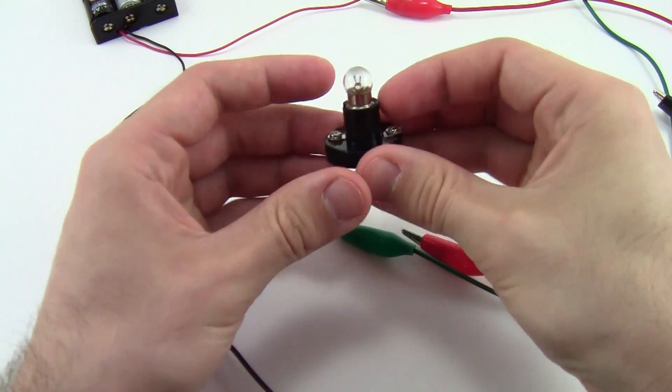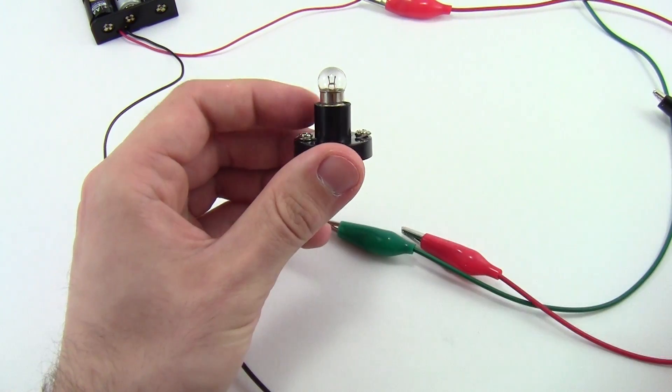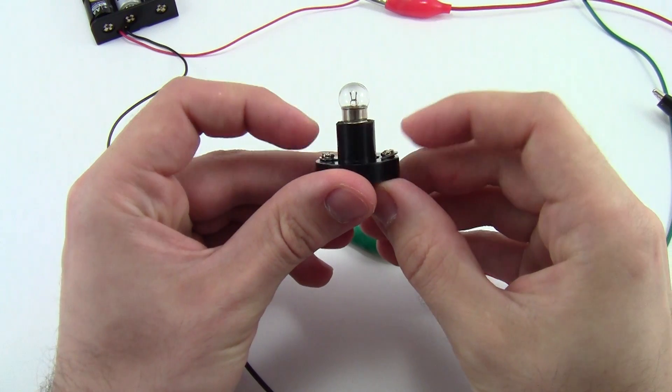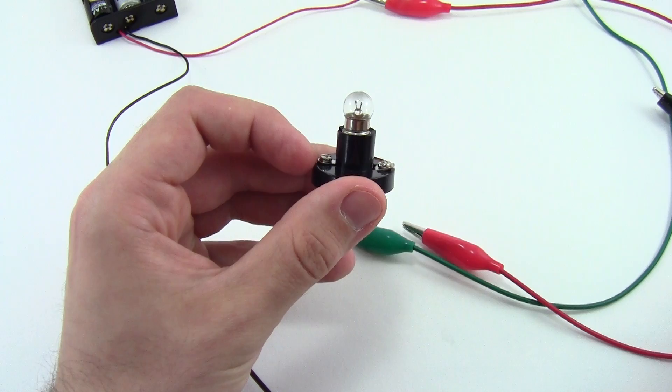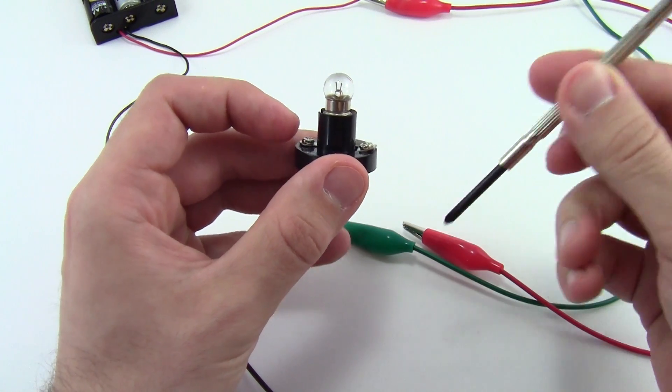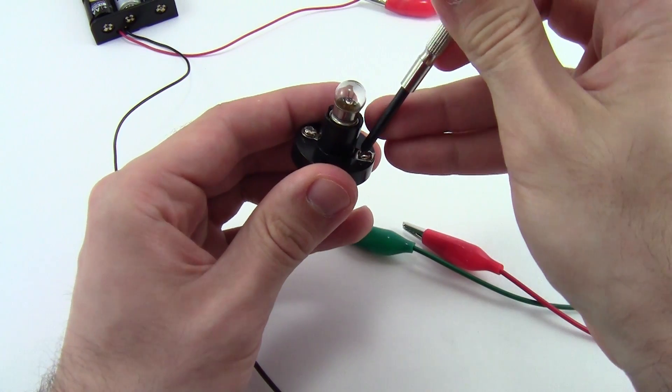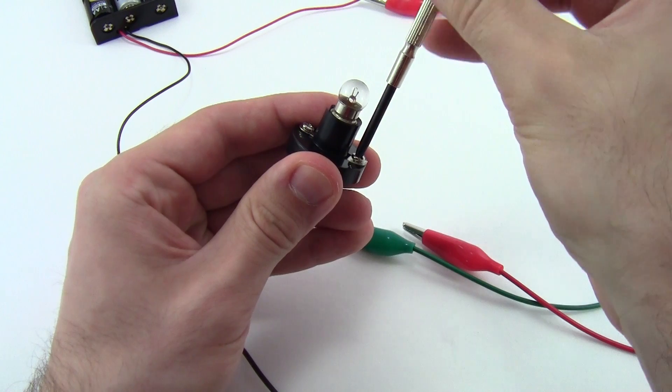Now you're going to take your light bulb holder, and it has these two little screws on it on either side that you can connect alligator clips to. It will be a little easier to connect to those if you actually take a small Phillips head screwdriver and loosen the screws slightly.